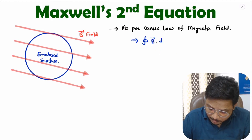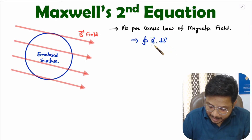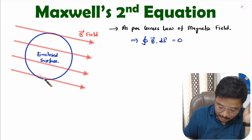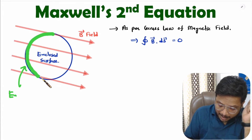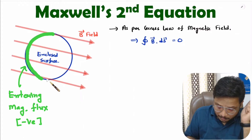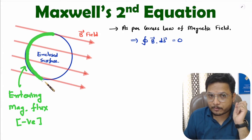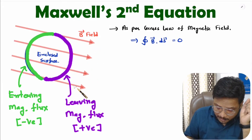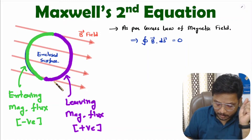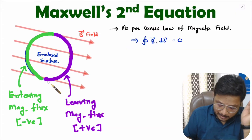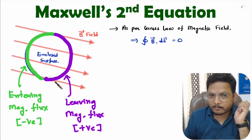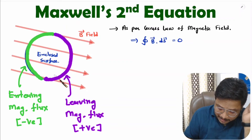Now the question is: how is it zero? Here we have an enclosed surface. Over one side, the magnetic field is entering the surface — entering flux is negative. Over the other side of the surface, the magnetic field is leaving the surface — leaving flux is positive. The entering flux and leaving flux are equal, so positive and negative flux cancel each other, meaning total flux through the enclosed surface is zero.